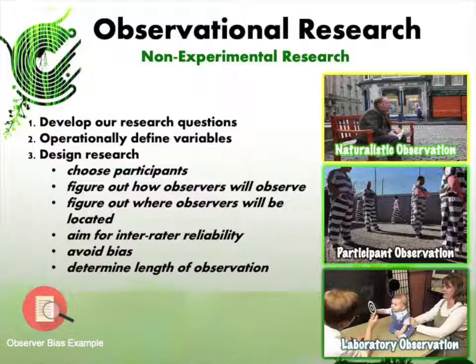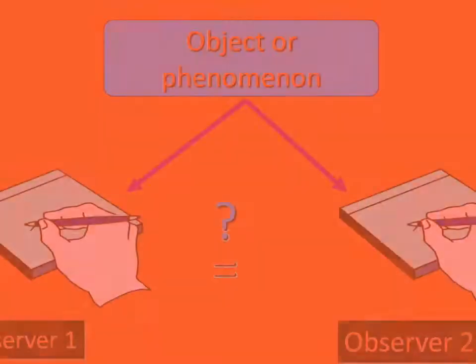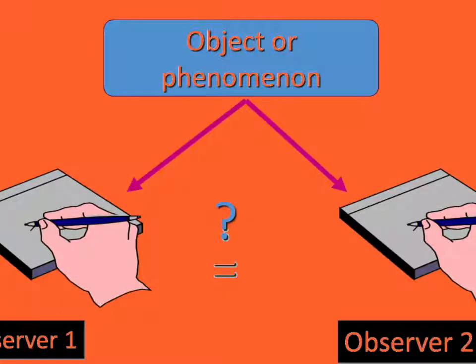If one researcher comes back with 15 examples of synchronization and another comes back with two, pause and review the operational definitions together. Figure out why you're not seeing the same behavior — is it because you're viewing it differently, or is one person not accurately observing? You can identify issues in your data collection method and make adjustments as you go, always working to avoid bias.